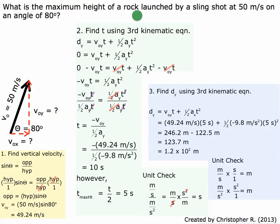Let's do a unit check. Meters per second times seconds equals meters — correct. Meters per second squared times seconds squared: the seconds squared cancel, leaving meters — correct. So the maximum height of a rock launched by a slingshot at 50 meters per second on an angle of 80 degrees is 1.2 times 10 to the 2 meters.